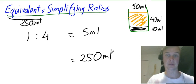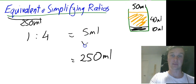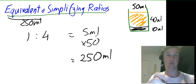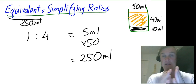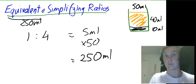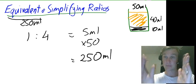Now to get to 250 ml I know that what I need to do to 5 is multiply that by 50. So all you have to do when you're creating equivalent ratios is you've got to do the same as you would as if you were finding an equivalent fraction. And that is multiply the top number by the bottom number.